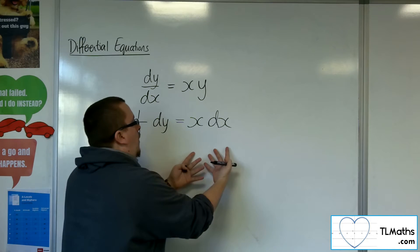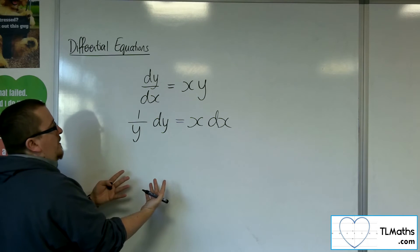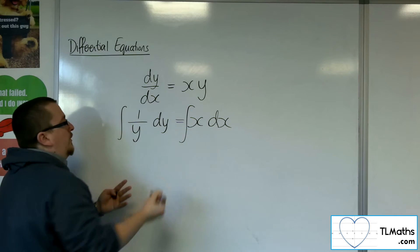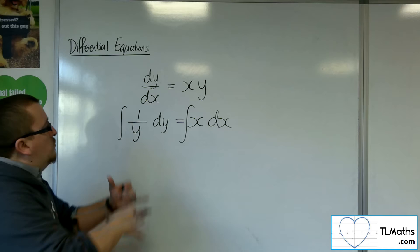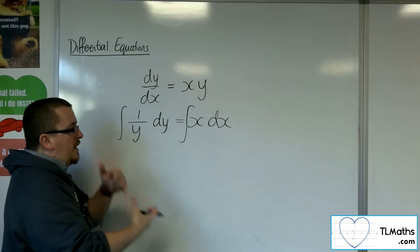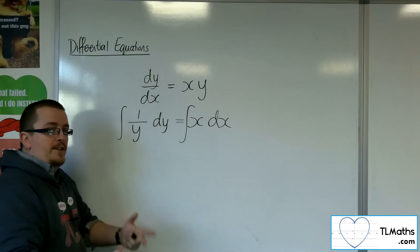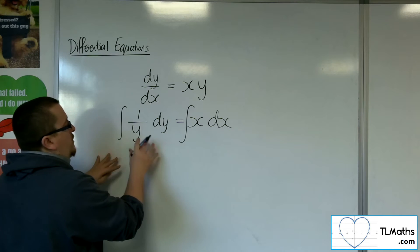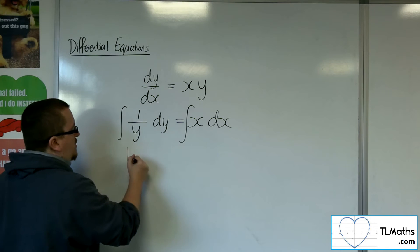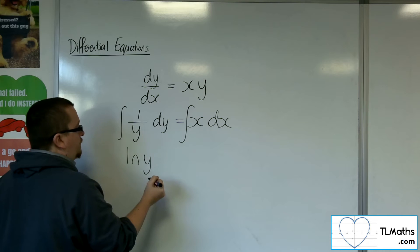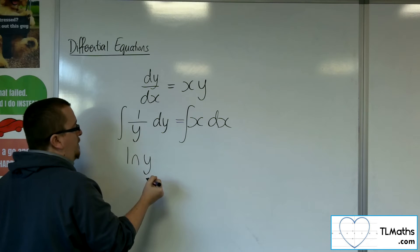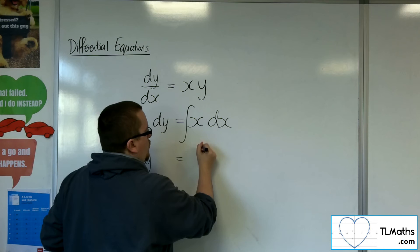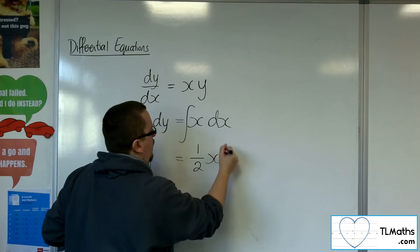What we can then do is integrate both sides of that equation. So the rearrangement comes first, and then you integrate both sides. On the left-hand side, 1 over y dy integrates to log of y. And the right-hand side integrates to one half x squared.